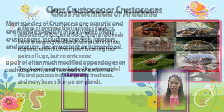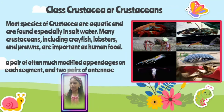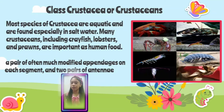The third is class Crustacea, or crustaceans. Most species of crustaceans are aquatic and are found especially in salt water. Many crustaceans, including crayfish, lobsters, and prawns, are important as human food. They have a pair of often much-modified appendages on each segment and two pairs of antennae. Their outer covering is made of calcified material, meaning a buildup of calcium in body tissue that makes it firm and heavier. They have a fused head and body called the cephalothorax. Some crustaceans have pincers that are used to hunt for food and for protection.